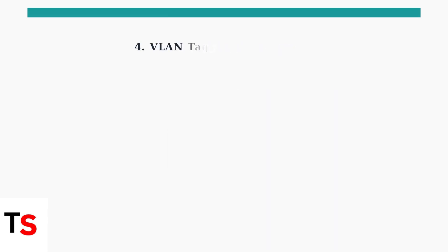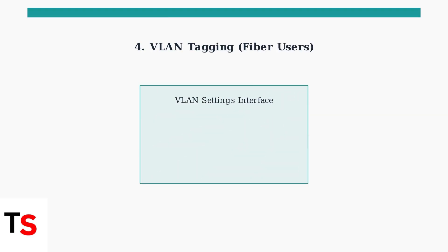For users with fiber internet, connection issues might be resolved by enabling VLAN tagging in your Orbi's advanced settings. Access the advanced settings in your Orbi interface and look for VLAN configuration options. Contact your internet service provider to get the correct VLAN ID and priority settings for your connection.